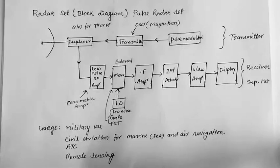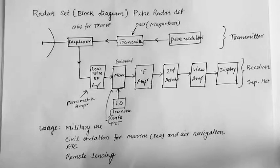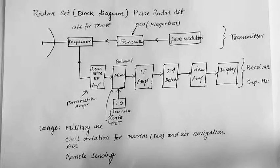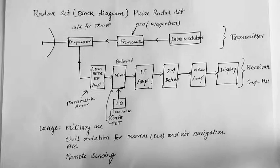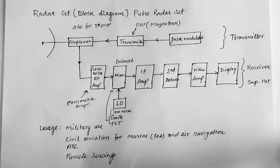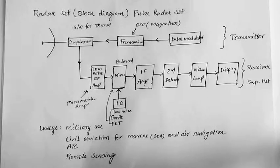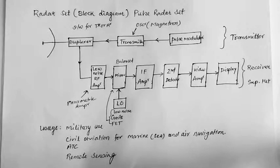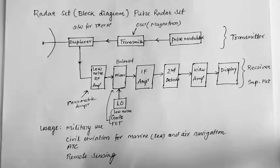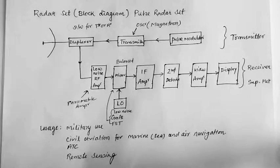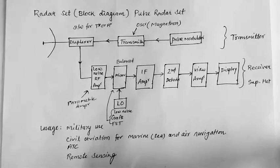Then the display. Simplest form of display is called the A scope where the echo amplitude produces a deflection modulated display on the electron beam in the CRO in the Y direction. The A scope is a deflection modulated display and it is more suited to ground radar applications.